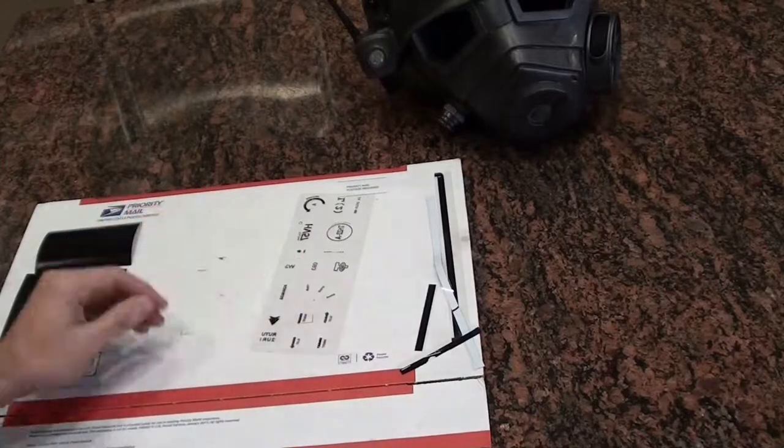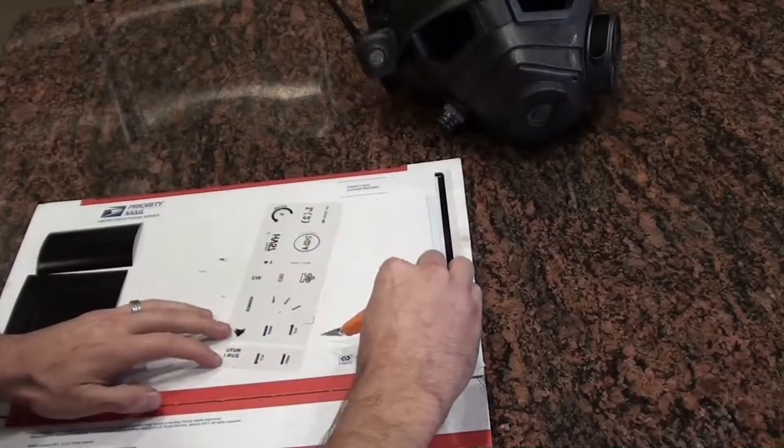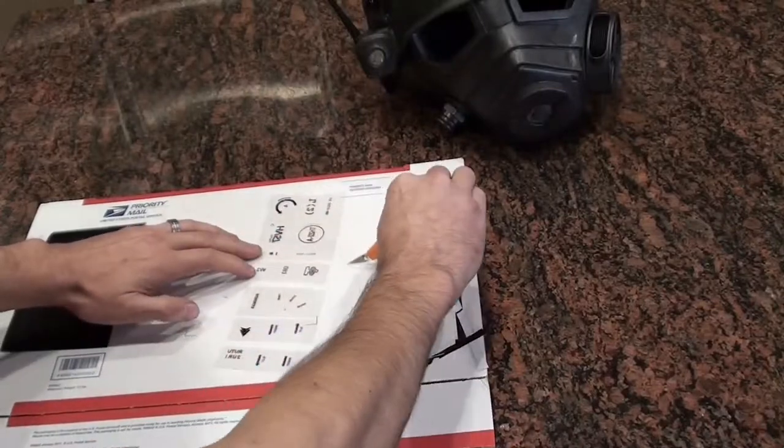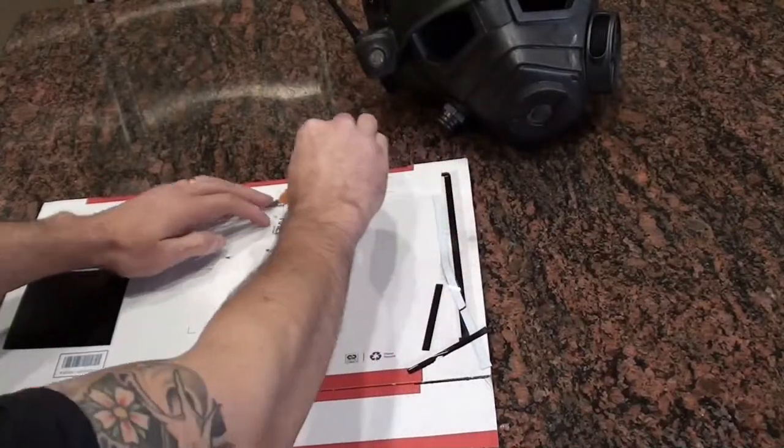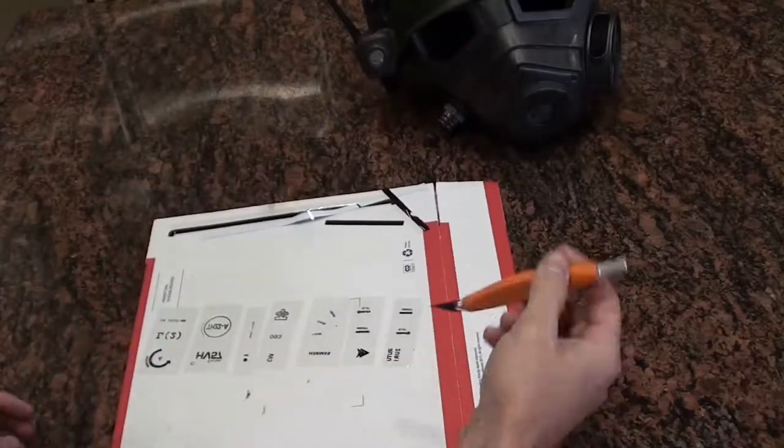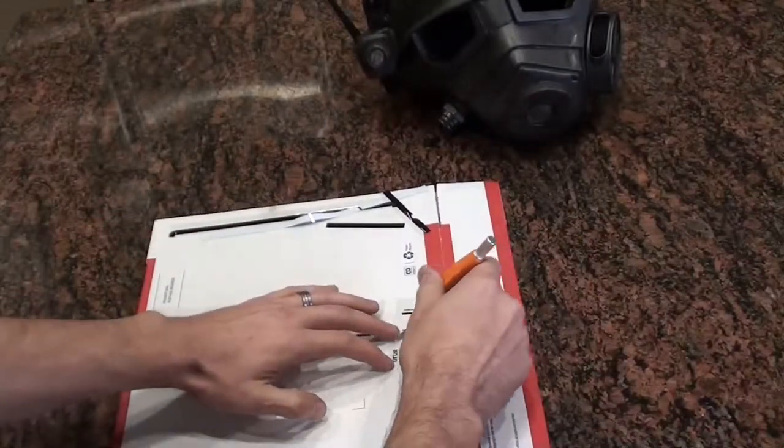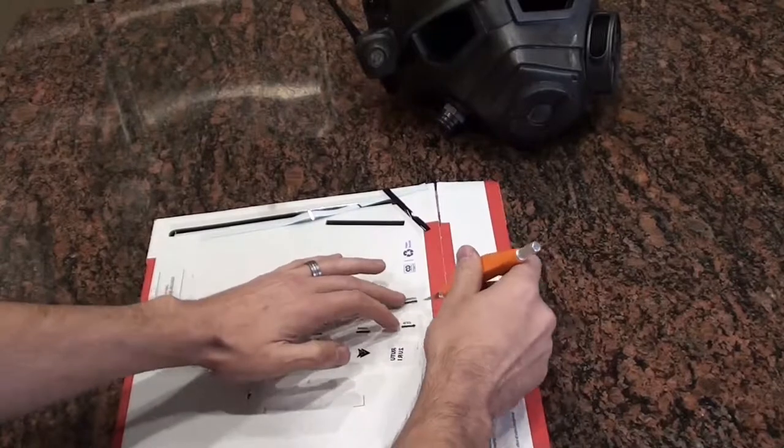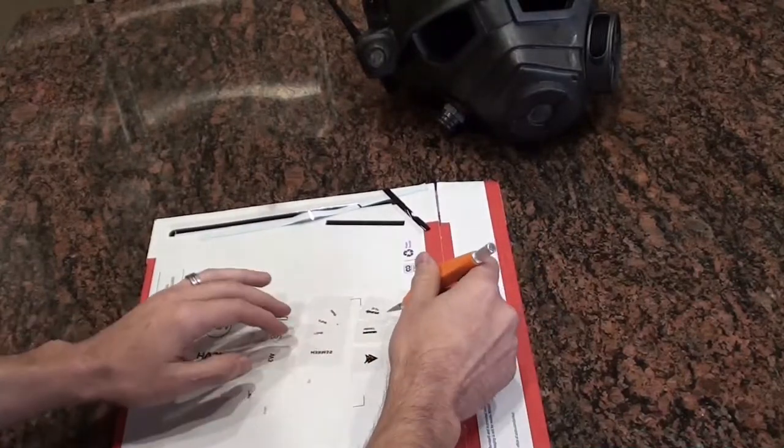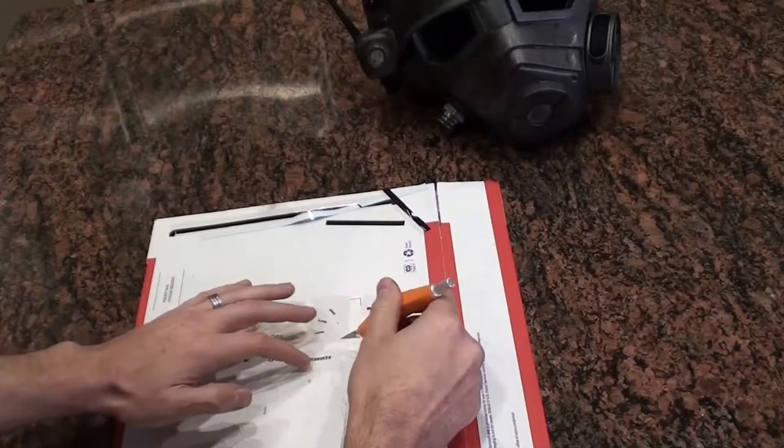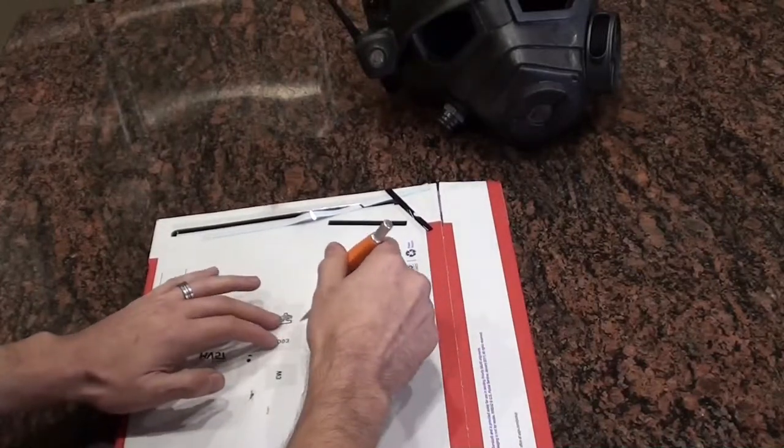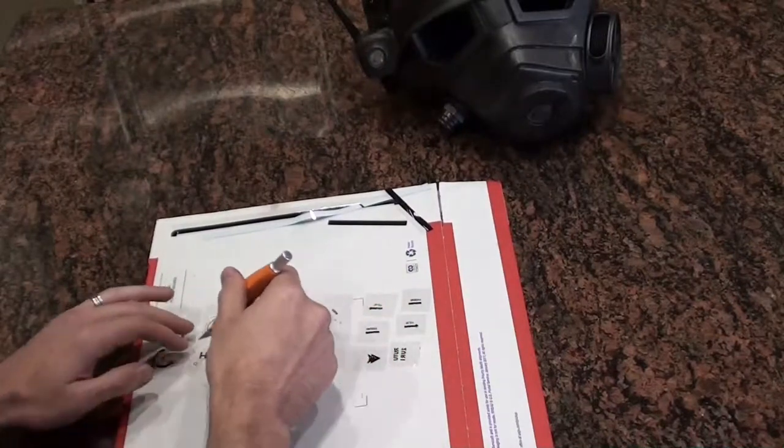Next you're going to separate all of the individual decals. The exacto blade works better than scissors just because the transfer sheet is so thin, it's hard to manipulate with your hands, so it's just easier to cut it when it's laying flat on a piece of cardboard. Make sure you have a brand new blade or newly sharpened blade so that there's not any snagging or catching on the transfer sheet.